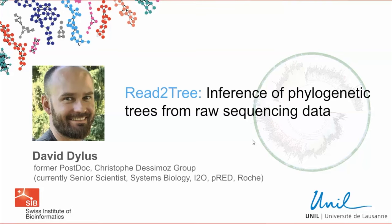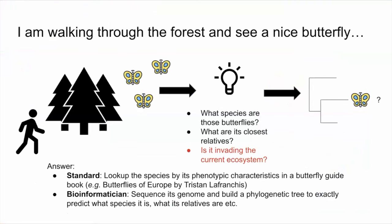Let me start with a small introduction. Let's assume that I'm a nature enthusiast and I like to walk through the forest. In this forest, I see a nice butterfly depicted with yellow and blue colors. I'm curious — I want to understand what species those butterflies are, what are its closest relatives, and specifically in the context of doing a phylogenetic tree, I want to understand whether the species is currently invading our ecosystem. If that species would fall with other butterflies that you find in a very distant location, I would be concerned and might inform some conservation organizations.